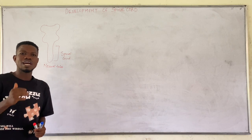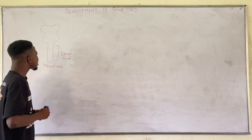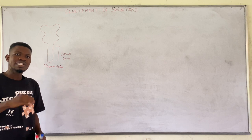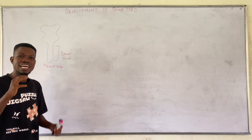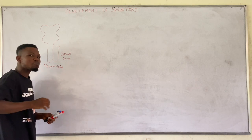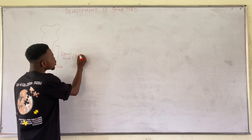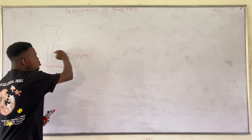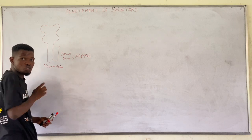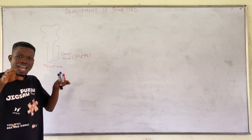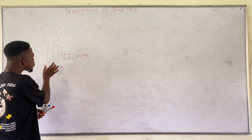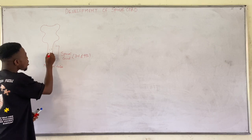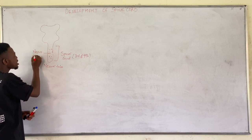How the development of the spinal cord undergoes is what we want to look at. If you look at the cross section of the spinal cord, that is where you can evidently understand how development of the spinal cord looks like, because development of the spinal cord takes place around the third and fourth week of development. The walls of the caudal part of the neural tube are made up of what we call neuroepithelial cells.